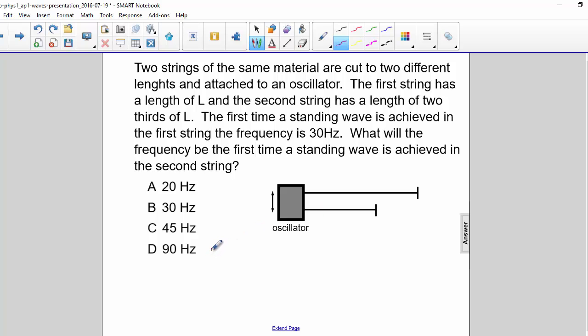So the first one has a length of L, and the second one has a length of two-thirds L. The wavelength for the first time a standing wave is achieved would be 2L over 1, so just 2L.